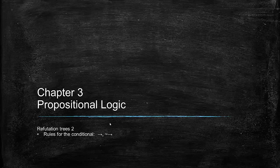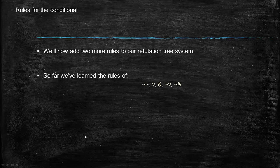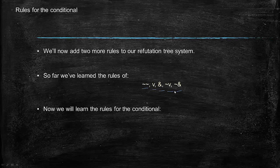All right, so round two of refutation trees. Today we'll talk about the tree rules for the conditional and the negated conditional. So far we've learned the rules for double negation, for disjunction, for conjunction, for negated disjunction, and for negated conjunction. So now we'll learn the rules for the conditional.